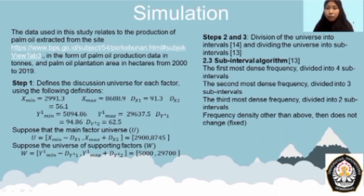Then step number two is to divide the universe into intervals, and then we re-divide intervals into subintervals with algorithm 2.3. As we can see on the screen, the first most dense frequency we divide into four intervals, second most dense frequency divide into three subintervals, third most dense frequency divide into two subintervals, and frequency density other than above we don't change—it's fixed.